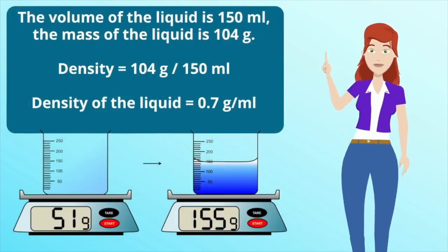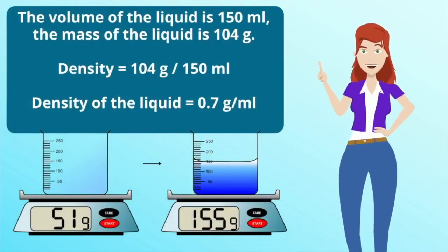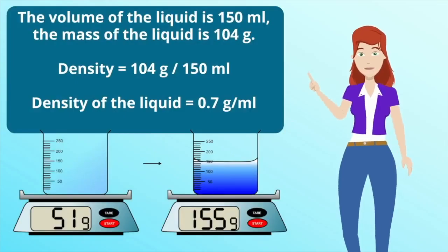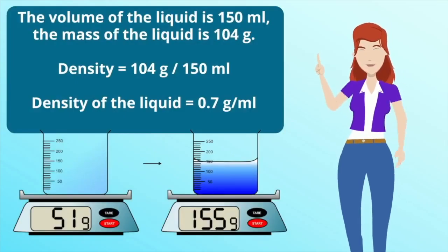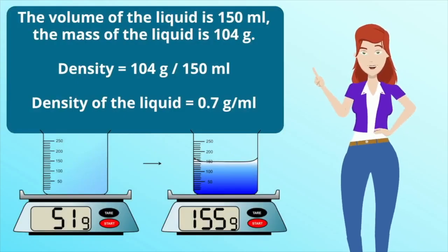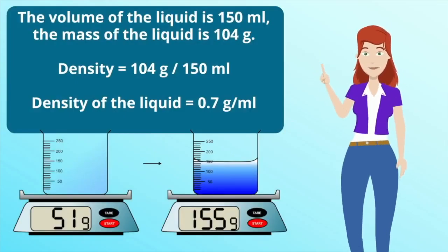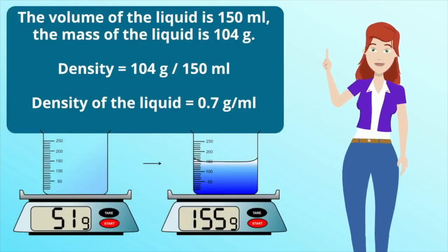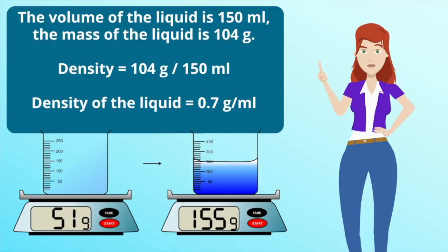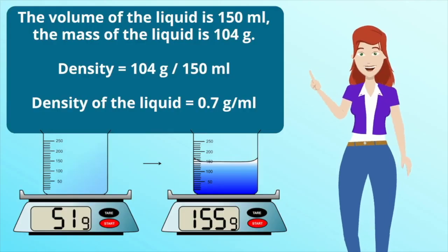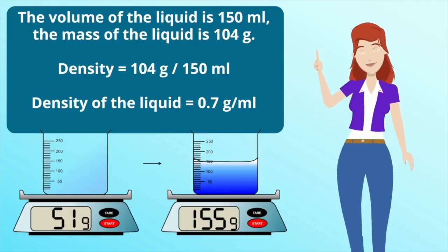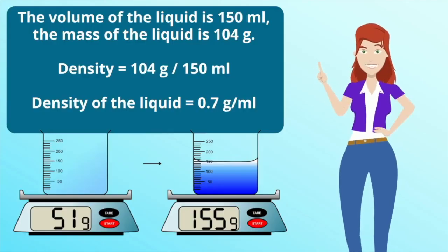The volume of the liquid is 150 milliliters. The mass of the liquid is 104 grams. So density equals 104 divided by 150. The density of the liquid is 0.7 grams per milliliter.